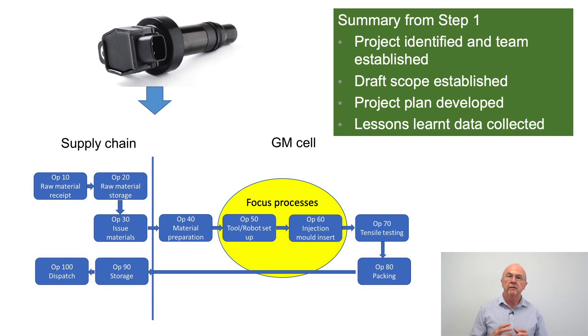In step one of the seven-step approach we would have identified the project team, established a draft scope, identified a project plan, and collected the relevant lessons learned data. If we remember from step one, the team had already identified potential focus areas for the FMEA project.